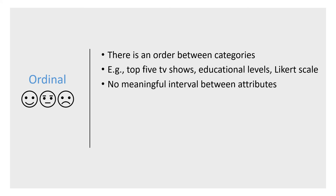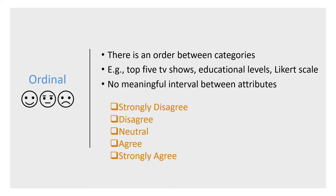Ordinal variables are variables that have two or more categories; however, unlike nominal variables, the categories in ordinal variables have a logical order. Examples include top 5 TV shows, education levels, and Likert scale responses from 'totally disagree' to 'totally agree.' Although we can rank the categories, there is no meaningful distance between one rank and another. For instance, the distance between 'strongly disagree' and 'disagree' is not half the distance between 'strongly disagree' and 'neutral.'